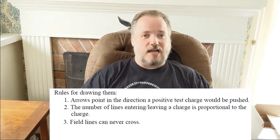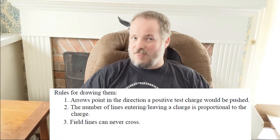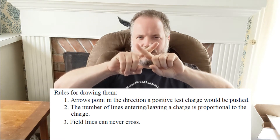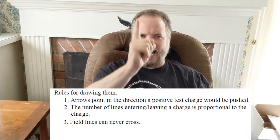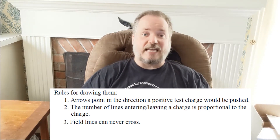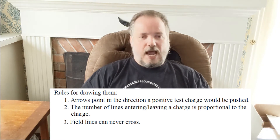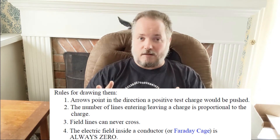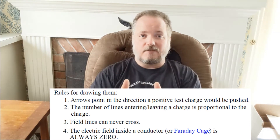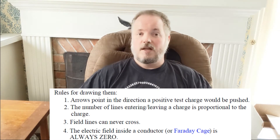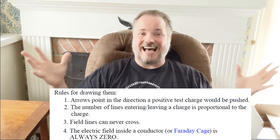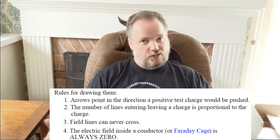Rule three: because these lines indicate the direction things are pushed, they can never cross. Two crossing lines would imply two different force directions at the same point, which is impossible for vectors. Rule four: inside a metal, when charge is on the outside, the electric field is always zero. This means you can use a metal to shield things from outside electrical influences — Faraday discovered this, and we call it a Faraday cage.